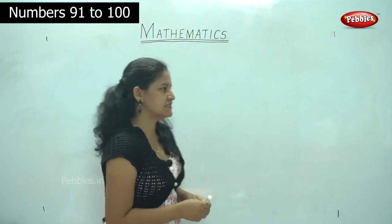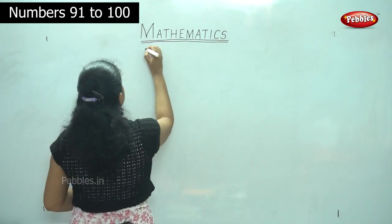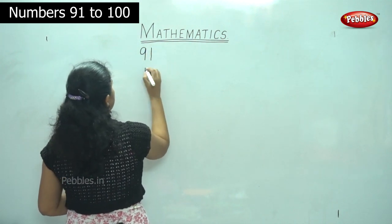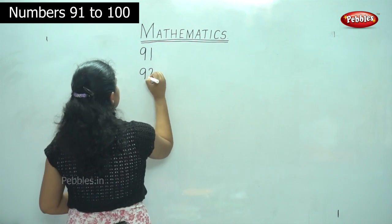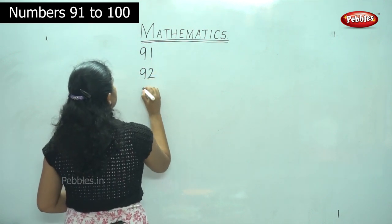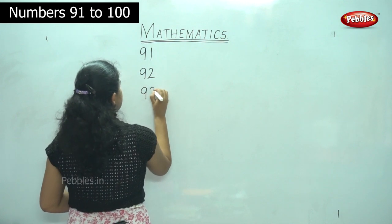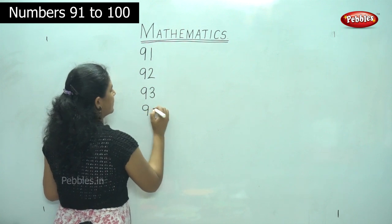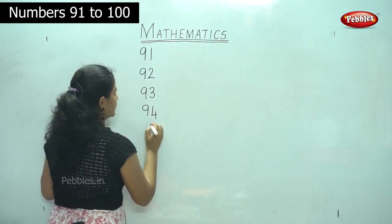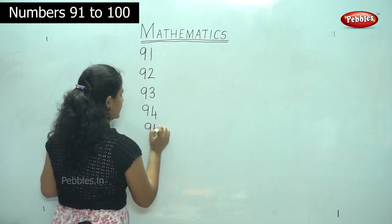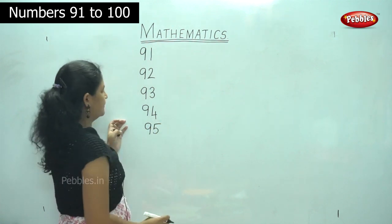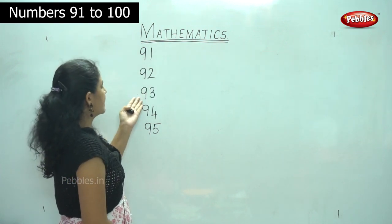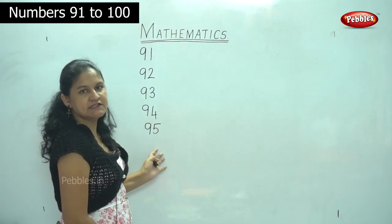Shall we start? We will start with 9 and 1: 91. 9 and 2: 92. 9 and 3: 93. 9 and 4: 94. 9 and 5: 95. So we have written the numbers 91, 92, 93, 94, and 95.